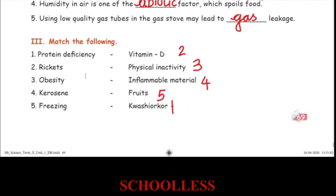Rickets is a disease caused by the deficiency of Vitamin D. Obesity is caused due to physical inactivity and lack of exercise. Kerosene is an inflammable material. Freezing fruits to preserve them is another food preservation method.